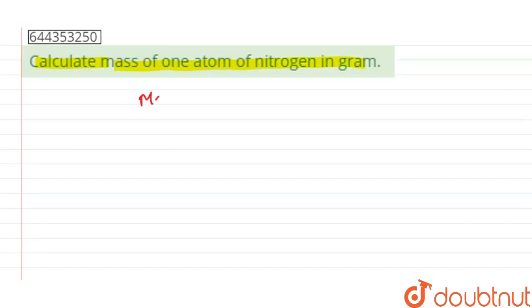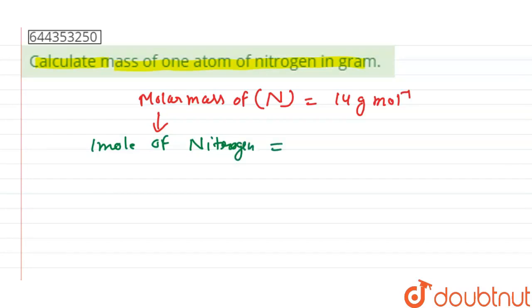We know that the molar mass of nitrogen is 14 grams per mole, which means one mole of nitrogen has a mass of 14 grams.